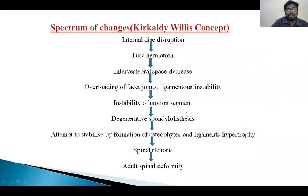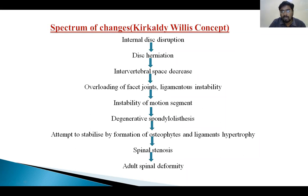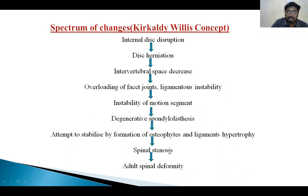What is the sequence of degeneration? First, internal disc disruption causes disc herniation, which leads to decreased disc space. This causes instability of the ligaments and overloading of the facet joints, leading to instability of the motion segment, which leads to chronic spondylolisthesis — that is, anterior slippage of one vertebra over the one below. The body stabilizes this deformity by formation of osteophytes and ligamentous hypertrophy, causing spinal stenosis or narrowing of the canals — either vertebral foraminae or intervertebral foraminae — which ultimately leads to spinal deformity.